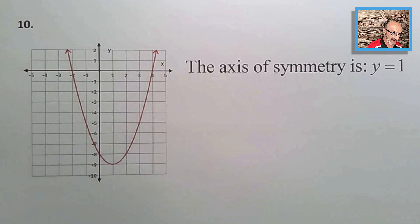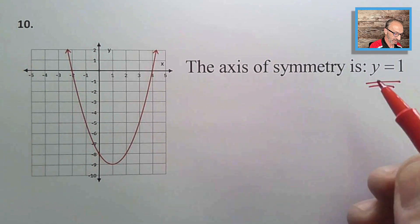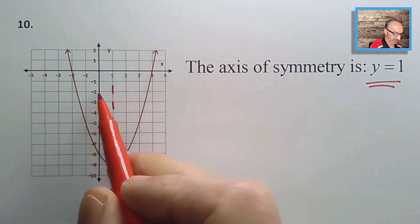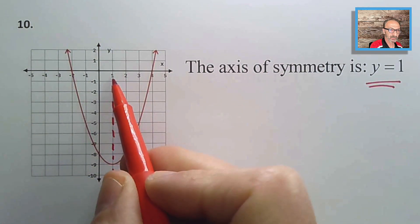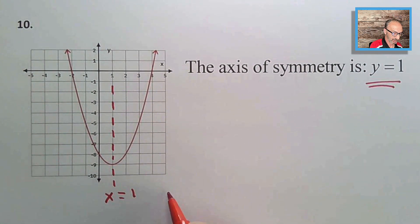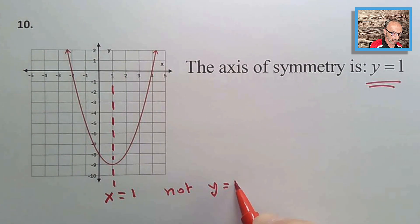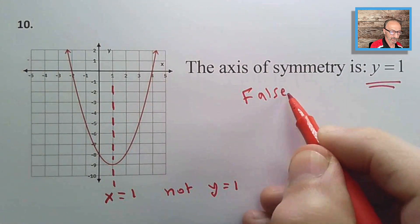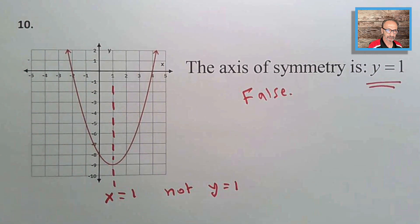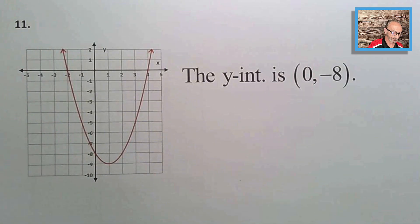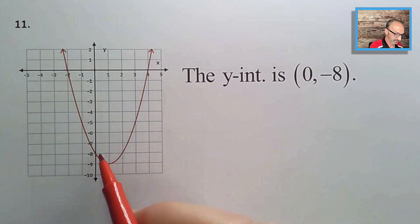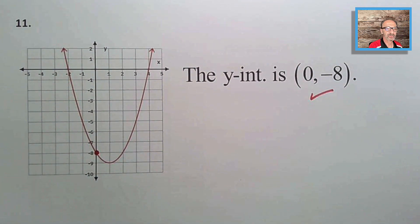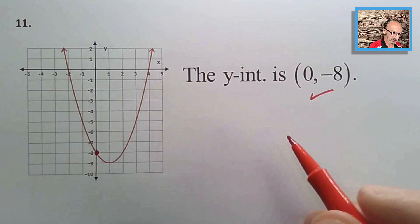Number ten: the axis of symmetry is y = 1. The axis of symmetry is actually x = 1, a vertical line. y = 1 would be a horizontal line. The statement is false.